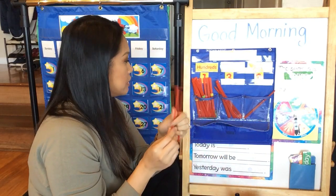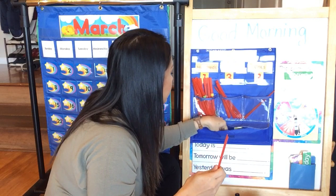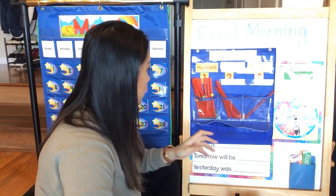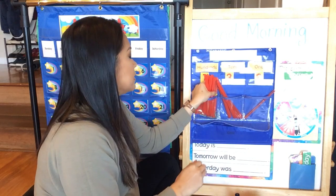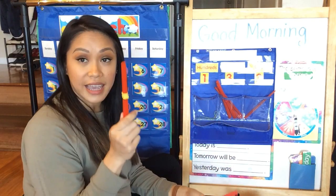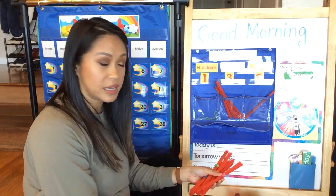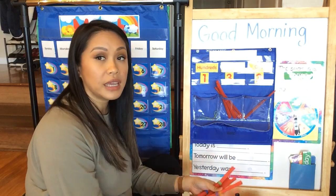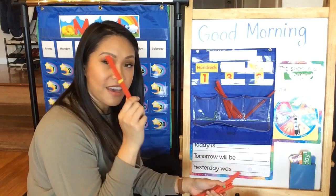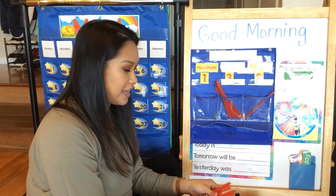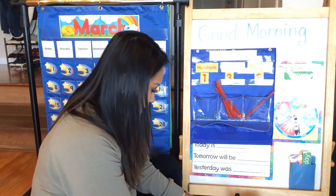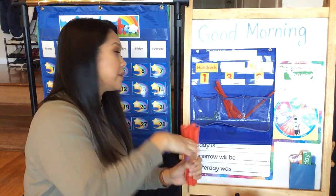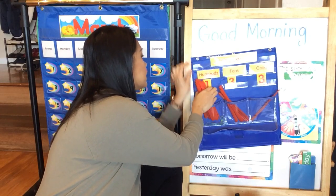One, two, three, and four. Good job. And now let's count by tens. I want to hear you count. Ready? Ten, twenty, thirty, forty, fifty, sixty, seventy, eighty, ninety, one hundred. Remember, if we have ten tens, we have to bundle it up — one hundred.